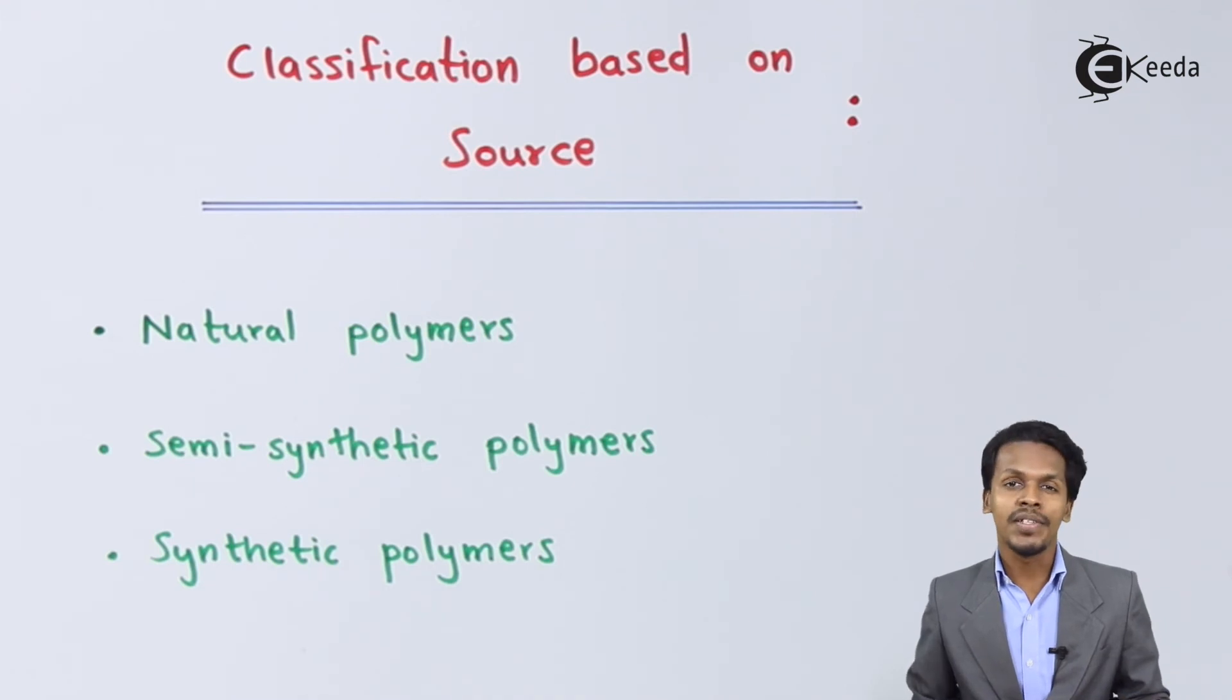The last point is synthetic polymers. These are polymers that are obtained from the industry by doing different chemical processes. That's why these synthetic polymers are also known as man-made polymers.